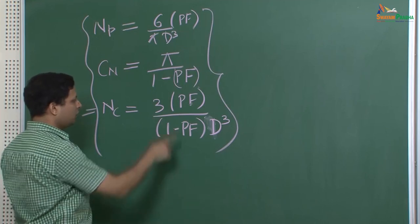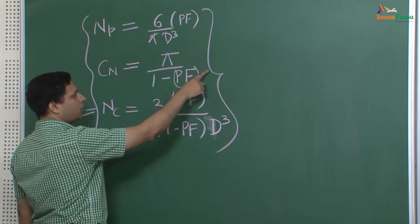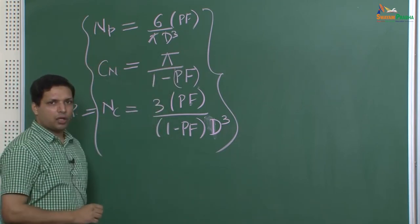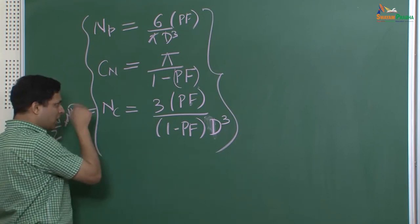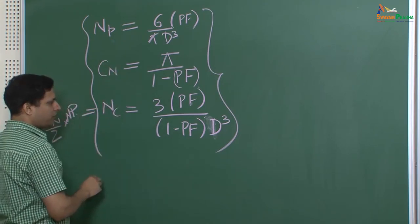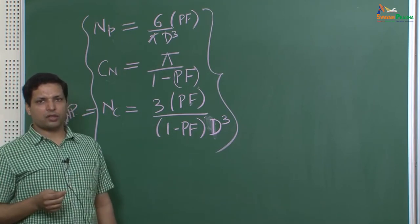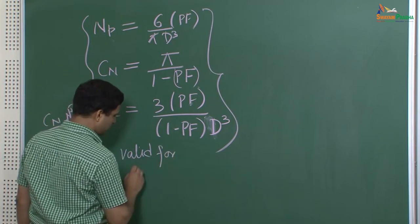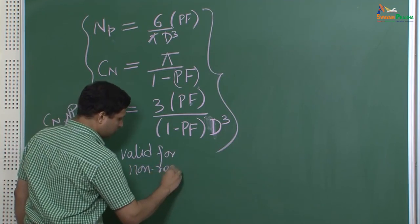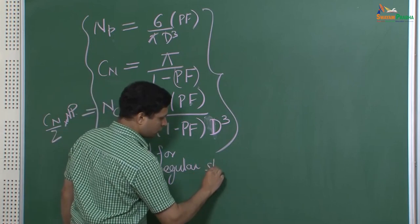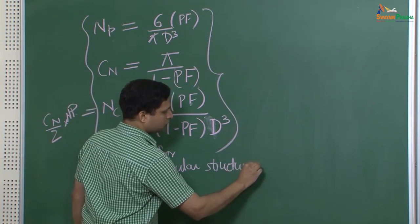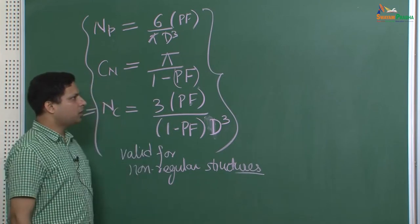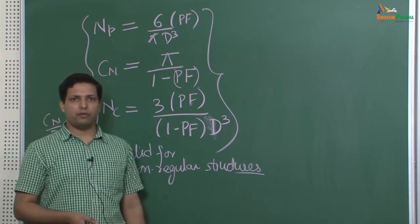Because we do not know the coordination number for non-regular structures, the relation for coordination number was obtained by researchers and given in terms of Pf, which we can calculate. Then we have NP and NC, which are important parameters for understanding how much densification is taking place. This is valid for non-regular structure.